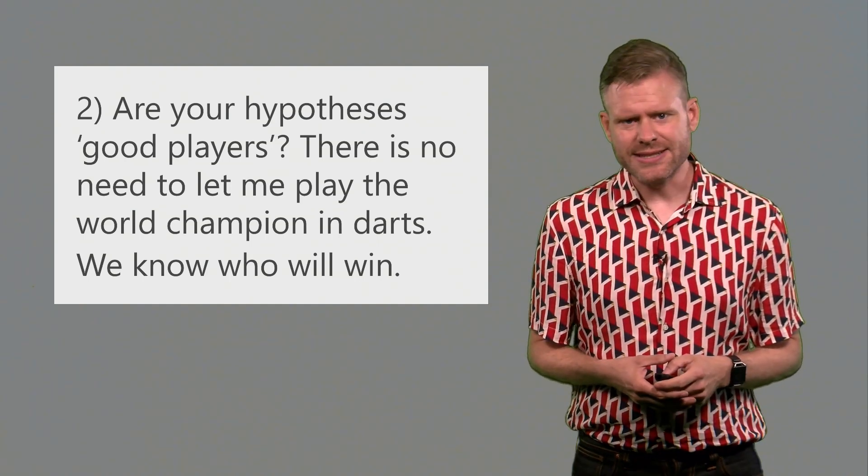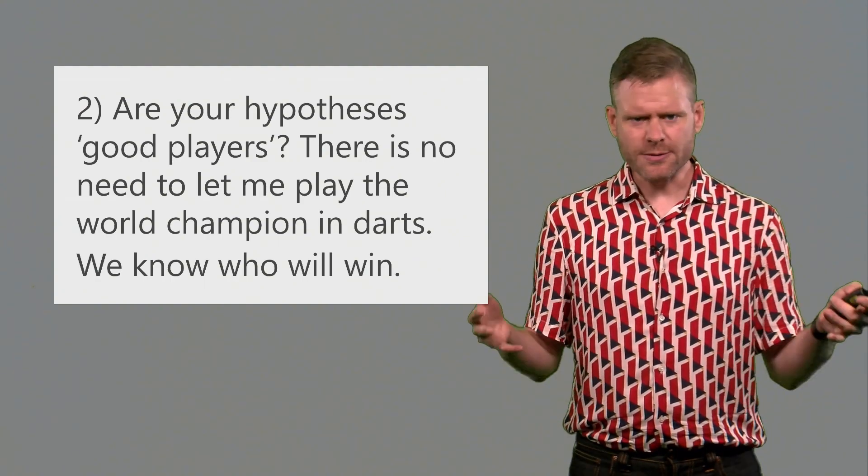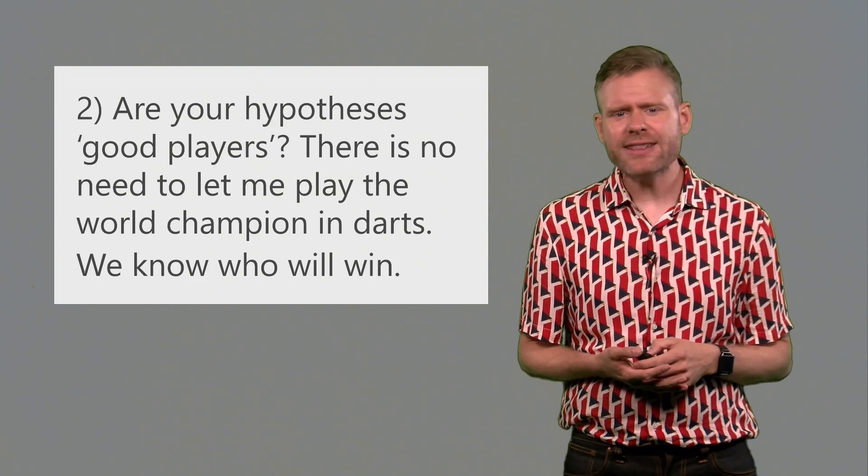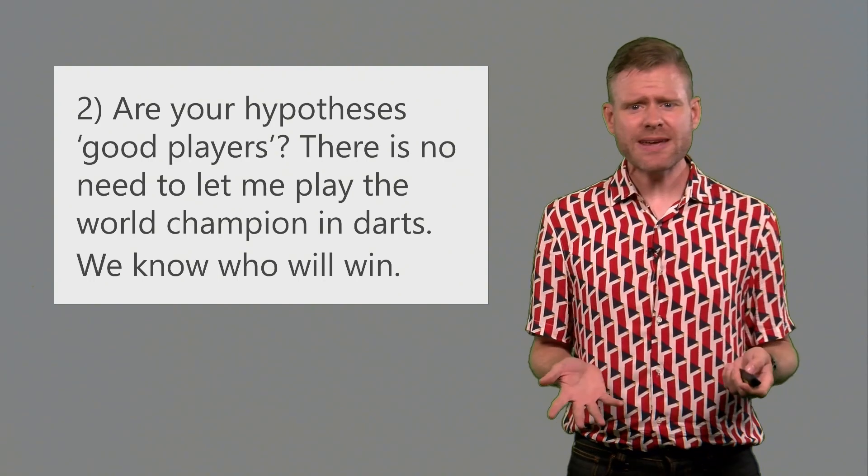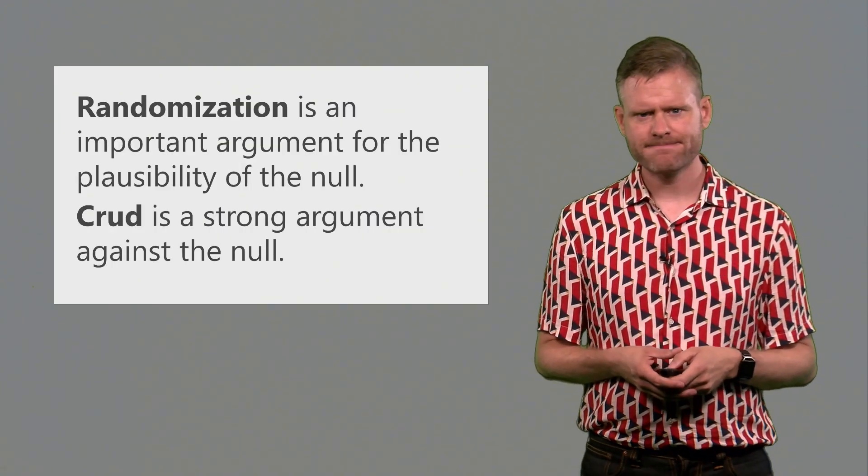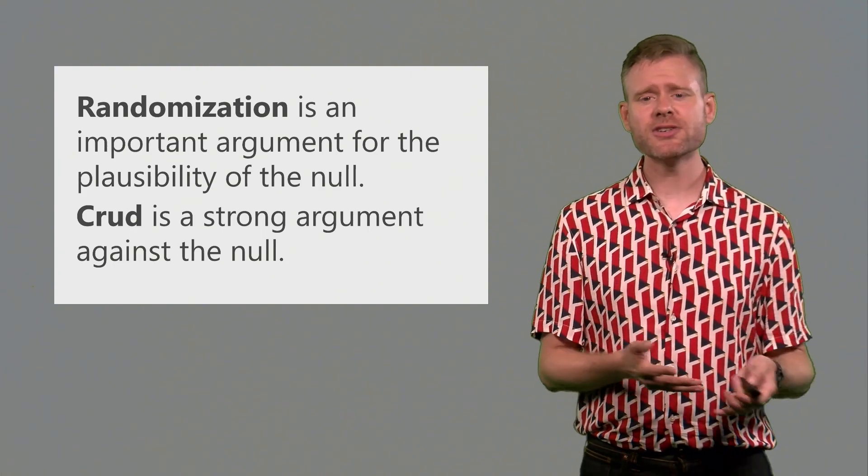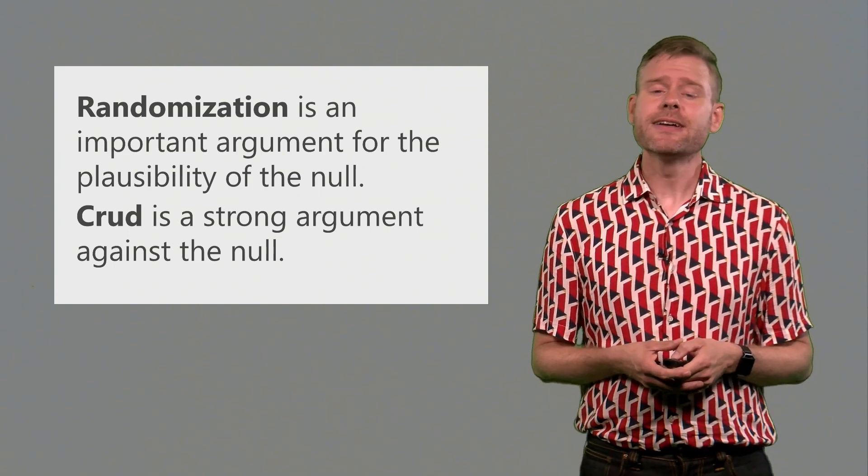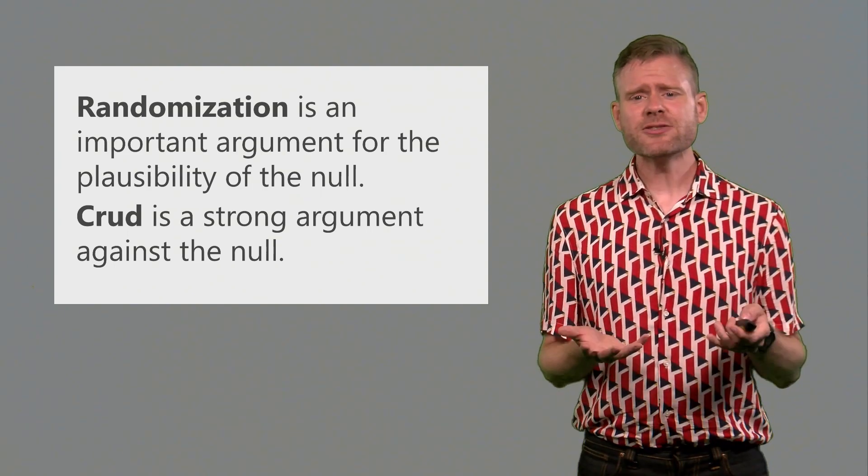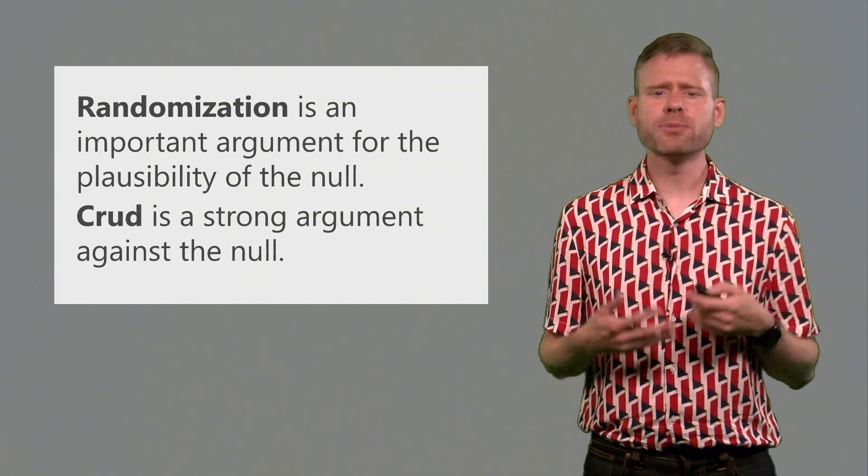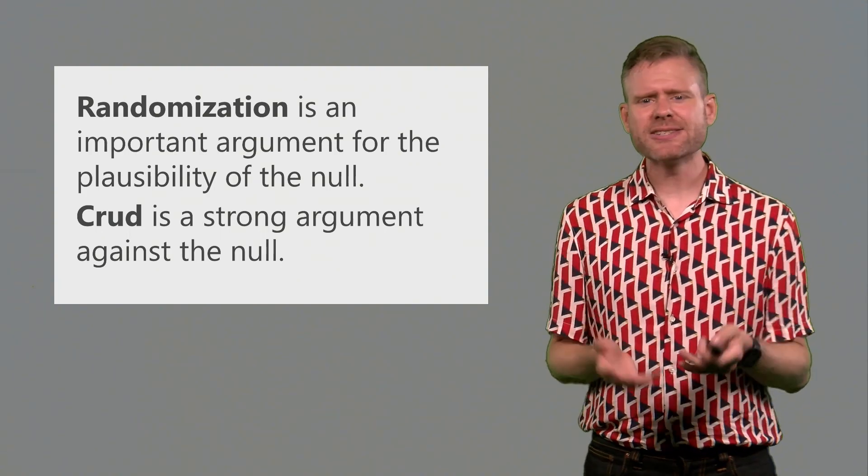The second thing to consider is whether your hypotheses are good players. Is it actually sensible to pit these two against each other, or do you know which of these is gonna win to begin with? There is, for example, no need to let me play the world champion in darts. We already know who's gonna win. The world champion, because I don't know how to play darts. In the case of a null hypothesis significance test, randomization is a crucial factor that contributes to the plausibility of the null hypothesis. Because we randomly assign, for example, people to an experimental condition and to a control condition, it's actually somewhat likely that the null hypothesis is true. Remember the statement by Cohen earlier that a null hypothesis significance test might be an interesting question to ask in a carefully controlled experiment. The reason for this is that randomization makes the null a plausible value, and thus a good player in a hypothesis test. It actually makes sense to test against it.